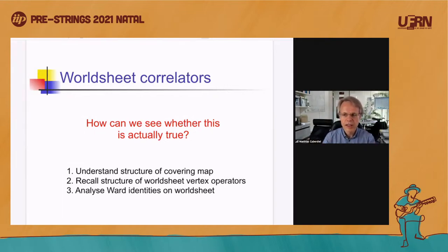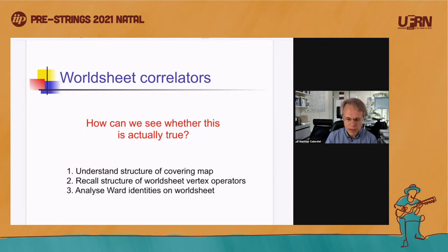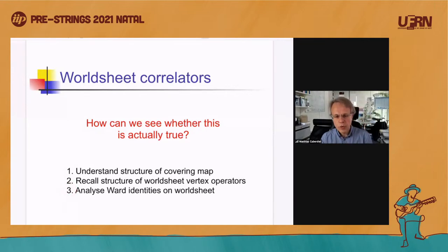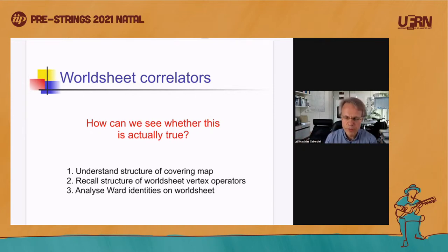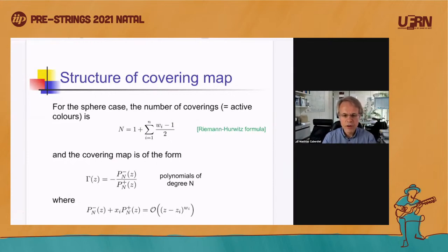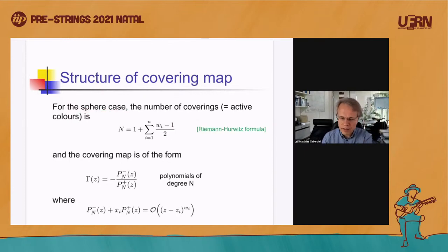To convince you this isn't just wishful thinking but what the world-sheet theory actually dictates, I need to explain three things: first, a clever way of parametrizing the covering map problem; second, the structure of the world-sheet vertex operators; and third — the key point — the Ward identities on the world-sheet that prove we get delta function localization. I'll give you the key elements of the argument. This was later generalized to higher genus by Bob and Lawrence.